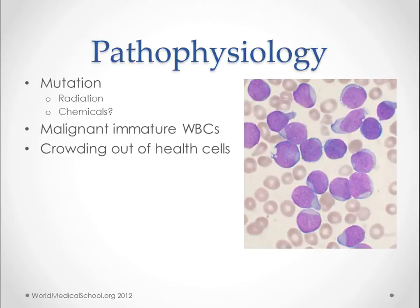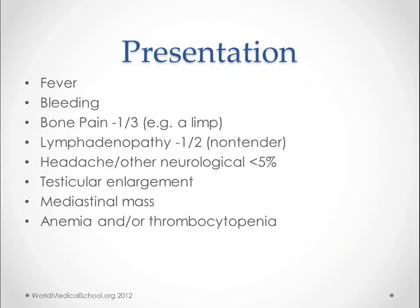The bone marrow is where we get a lot of our presenting symptoms like bone pain. If you have a periosteal proliferation of lymphoblasts, you get crowding, but you also get areas where there is necrosis, and some of that is where you get the bone pain. Around a third of these kids have some kind of pain. Younger kids won't know what to say about it, but they might present with lymphadenopathy, which is found in about half of these patients.